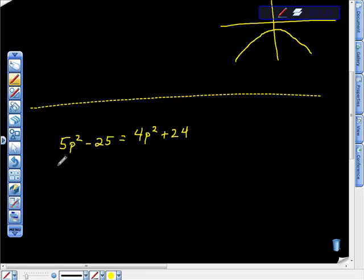This looks horrible, this looks absolutely horrible, and I admit that it does. The question is: for what value of p is 5 times p² minus 25 the same as 4p² plus 24? What number can we put in here that will make these sides equal to each other? Man, I don't know.